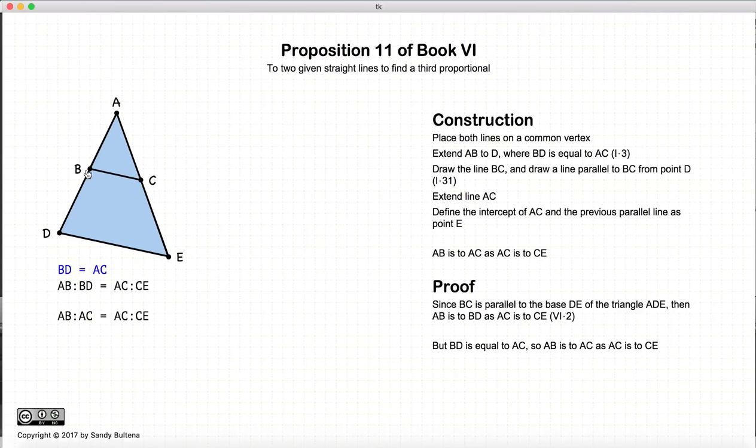But of course, BD is equal to AC. So we just cross out BD and replace it with AC, and we have AB to AC is equal to AC to CE.